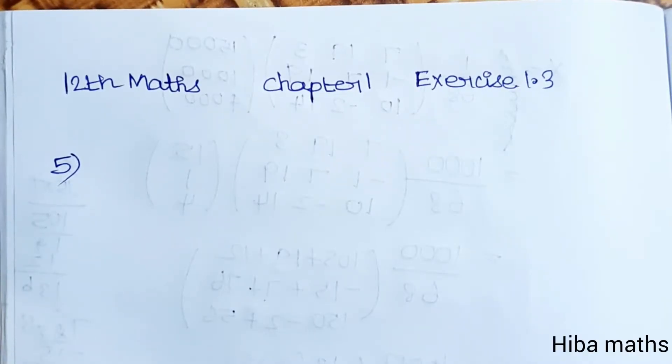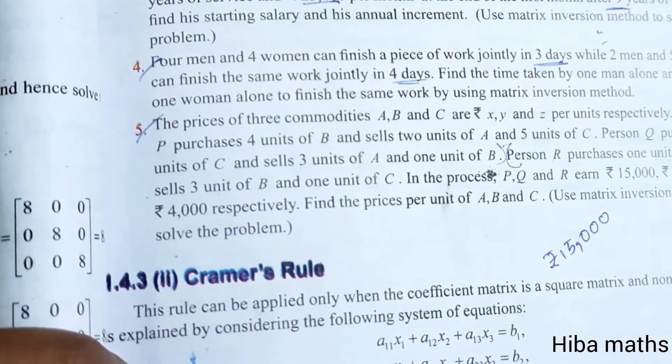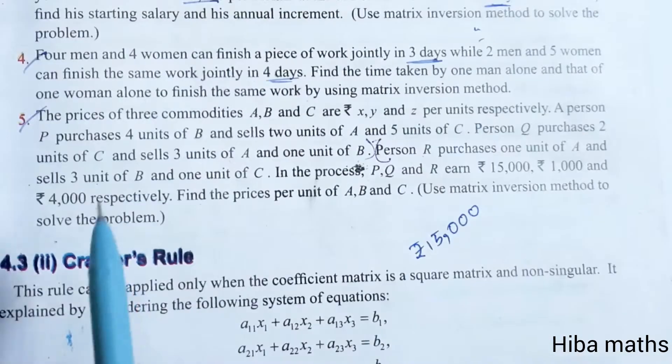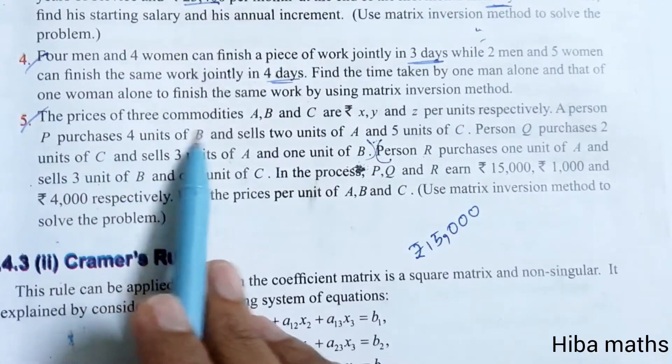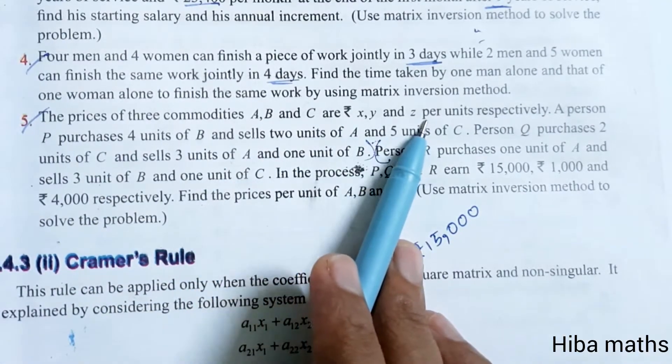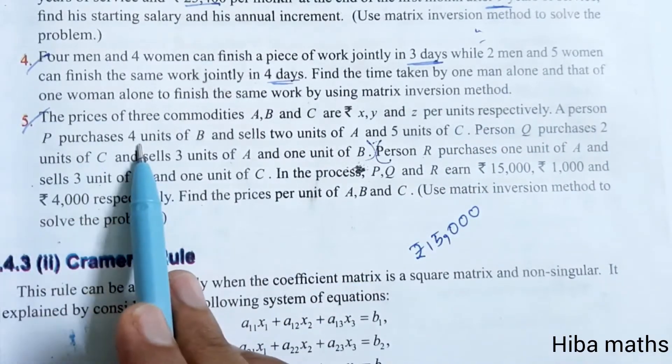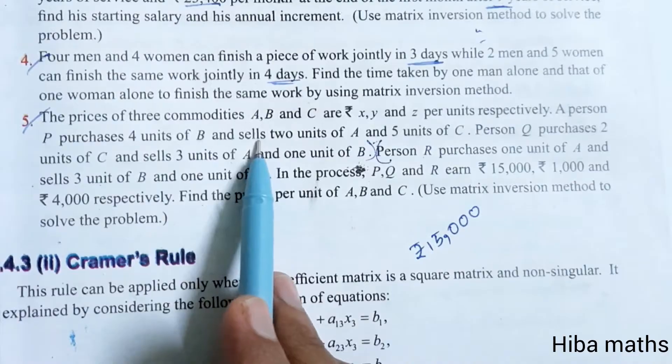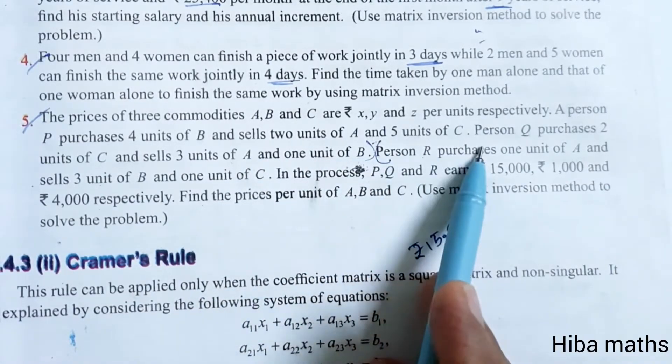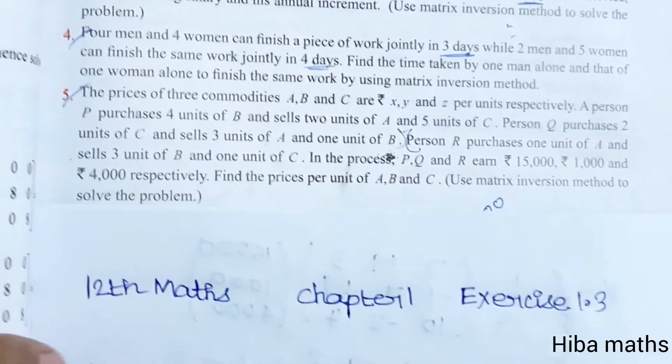Hello students, welcome to Hiba Maths 12th Standard Maths Chapter 1, Exercise 1.3, 5th question. The prices of three commodities A, B, and C are rupees x, y, and z per unit respectively.